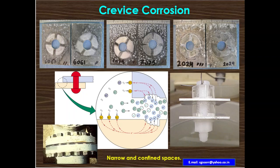A typical illustration involves crevice corrosion on 6061 aluminum alloy and 2024 aluminum alloy. Crevice corrosion occurs in narrow and confined spaces. It is noted that 6061 experiences a lesser extent of crevice corrosion than 2024 aluminum alloy.